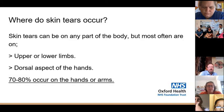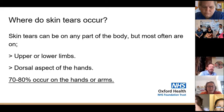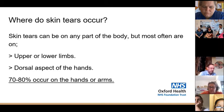Where do we mainly get these? They can be on any part of the body, but by far the most common places are your arms and legs. Most of them — around 70 to 80 percent — occur on the hands or the arms, but they can also be on the lower legs.